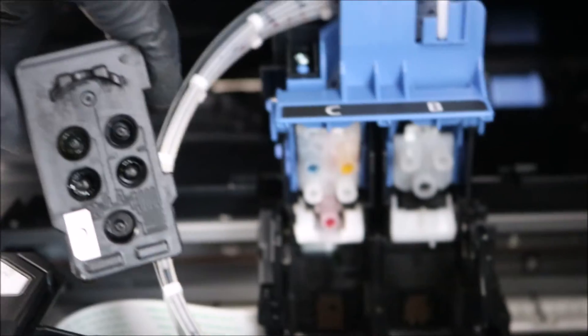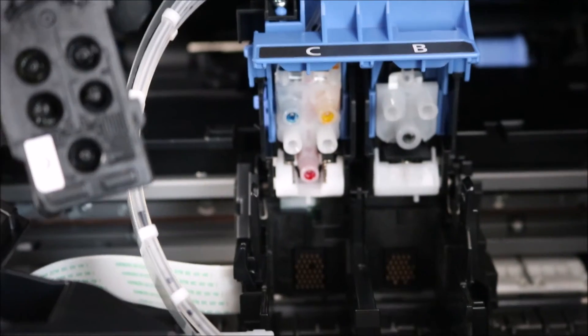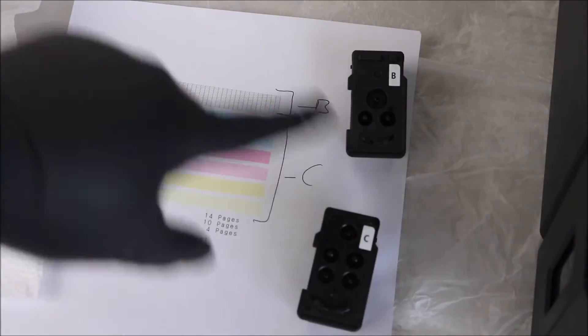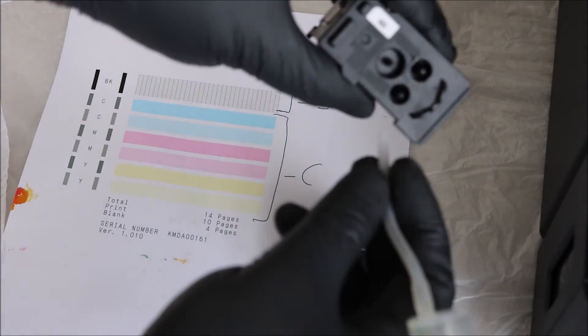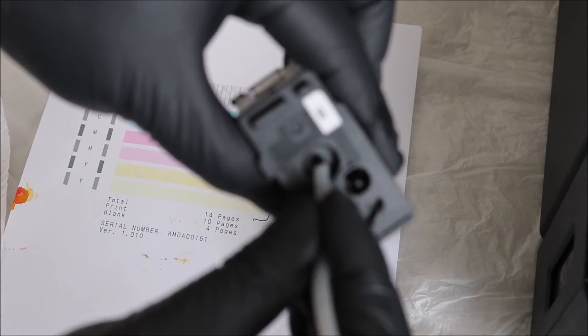You can do that to cyan even if you're not having issues with it necessarily. And you see there the pattern, so your top nozzle is going to be magenta. Your bottom left is cyan and your bottom right is yellow.